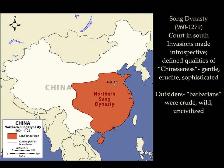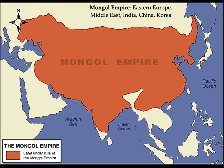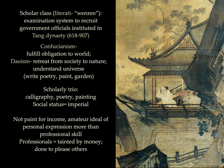During the Song dynasty, invasions were made by outsiders known as barbarians, and a definition of what it meant to be Chinese was also developed during this time. The outsiders conquered all of the Eastern world under Genghis Khan, who led nomads from the steppes north of China in the Mongol invasion. They conquered all of China, India, South Asia, the Middle East, and all the way to Eastern Europe — the Mongol Empire was the largest empire the world had ever known. The scholarly class was known as the Literati. Thanks to Confucianism, these Literati believed they should fulfill their obligation to the world, but also following Daoism, they would retreat from society to nature to better understand the universe.